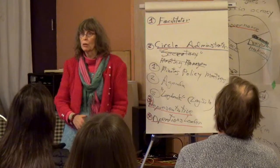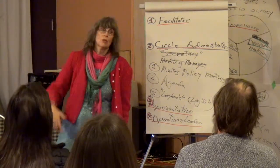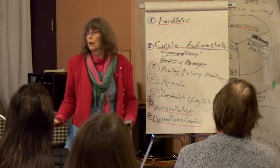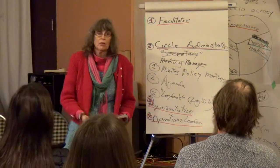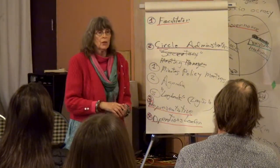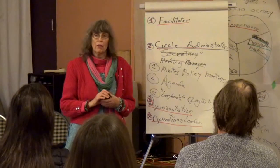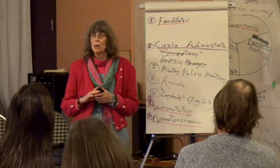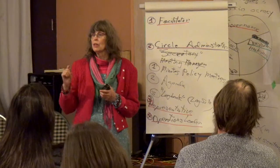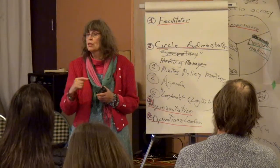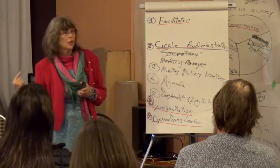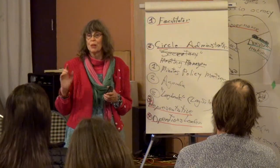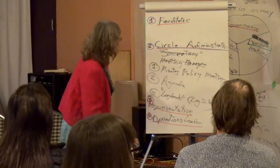What is the whole point of sociocracy organizations? Harmonious organization, which is held up by three values: transparency, effectiveness, and equivalence. Does equivalence mean we all have to decide everything about everything? No. It means we all have equivalent voice in our own circle relative to the things that we're doing in our circle — which is different.